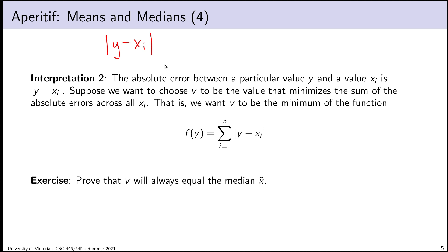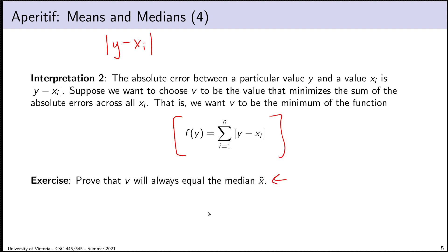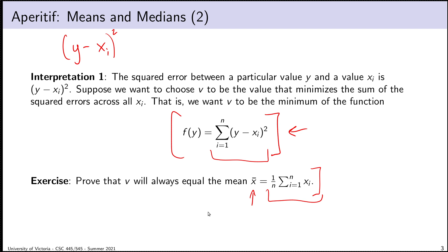I want to choose a representative that minimizes this new function — minimizing absolute error instead of squared error. And rather astonishingly, it turns out that the median actually attains the global minimum. I should be careful: it's not that v will always equal the median exactly — I should say the minimum will always be attained at the median, and there could be other values close to the median that also attain the minimum. But the key point holds.